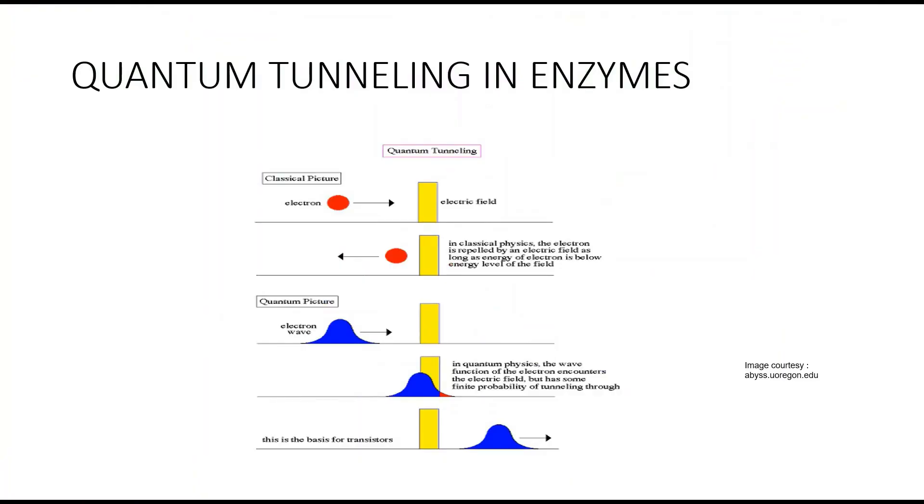Quantum tunneling is the quantum mechanical phenomenon where a subatomic particle's probability disappears from one side of a potential barrier and appears on the other side without any probability current flow appearing inside the barrier.